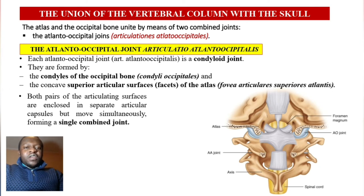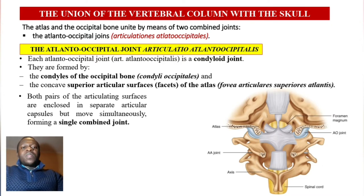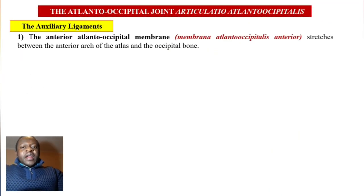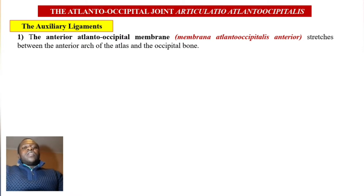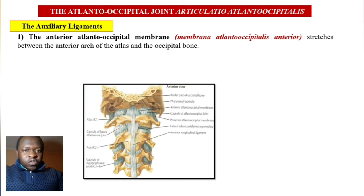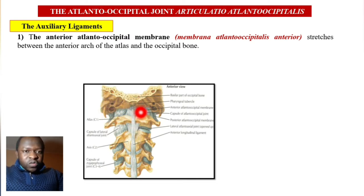Both pairs of articulating surfaces are enclosed in separate articular capsules but they move simultaneously, forming a single combined joint. The first auxiliary ligament is the anterior atlantooccipital membrane, membrana atlantooccipitalis anterior. This membrane stretches between the anterior arch of the atlas and the occipital bone — you can see it here between C1 and the occipital bone in the anterior view.